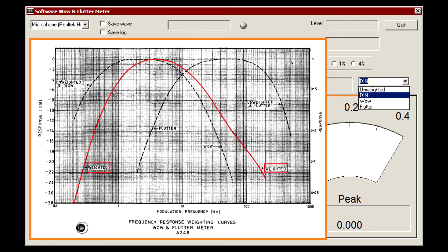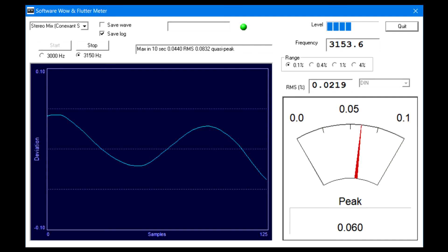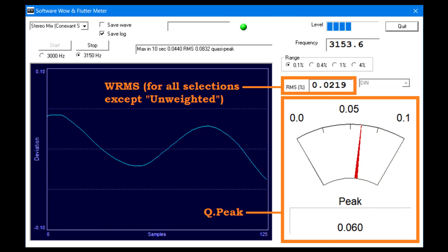This last option should be called Weighted Wow and Flutter and it is what you should choose if you want to compare your measurements to the numbers provided in equipment specifications. As you remember, IEC and DIN use 3150Hz, while CCIR and JIS use 3000Hz. But in reality, the difference makes little effect on the measurements. In fact, the program reports measurements using both DIN and JIS methods simultaneously. Both measurements are weighted. Sometimes they are reported in literature as WPeak or QPeak and WRMS, respectively.